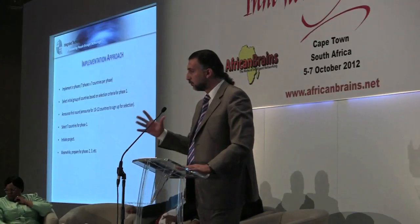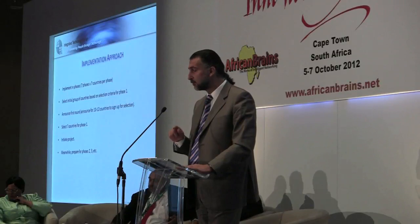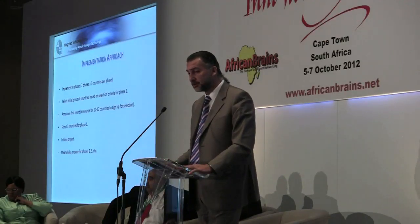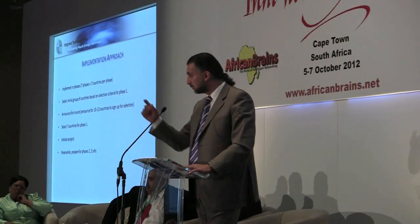Strategic partners with the needed hardware and software are also required. Nothing can be done overnight, and nothing can be done in one year, which is why we adopted a phased approach. With the minimum funding secured for phase one, implementation will include seven phases with seven countries per phase. To select the seven countries, we established selection criteria that each country must fulfill in order to join phase one.